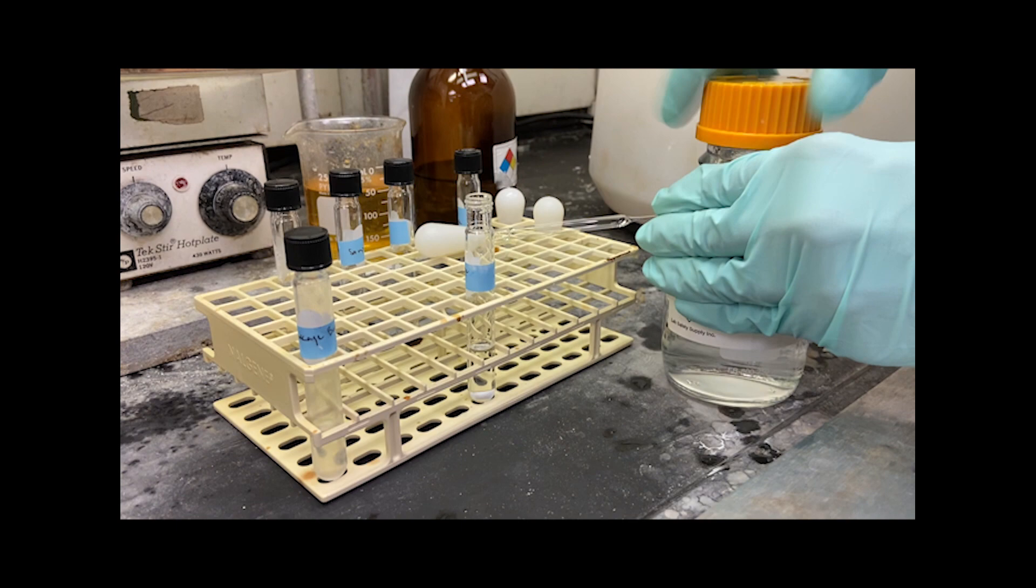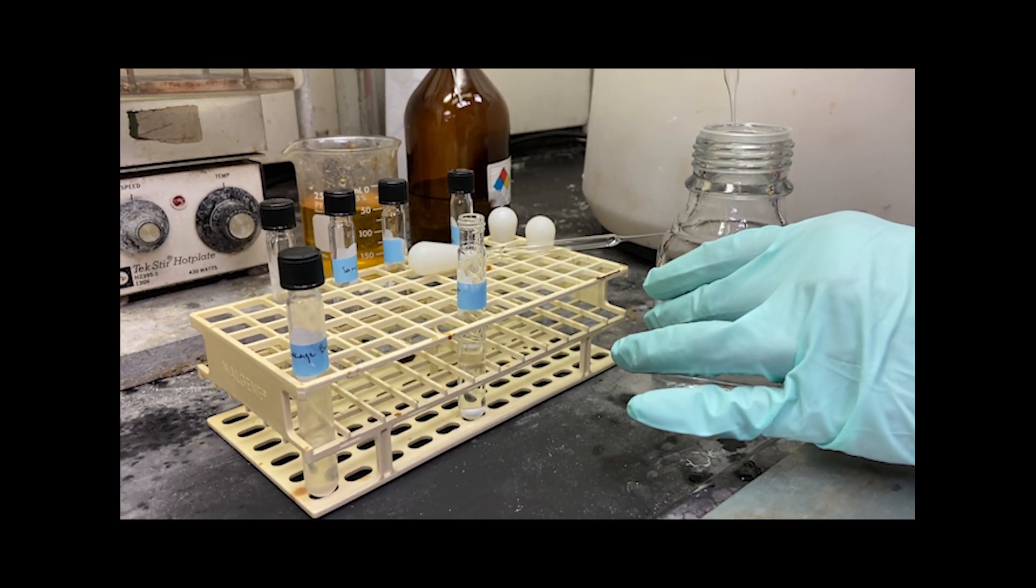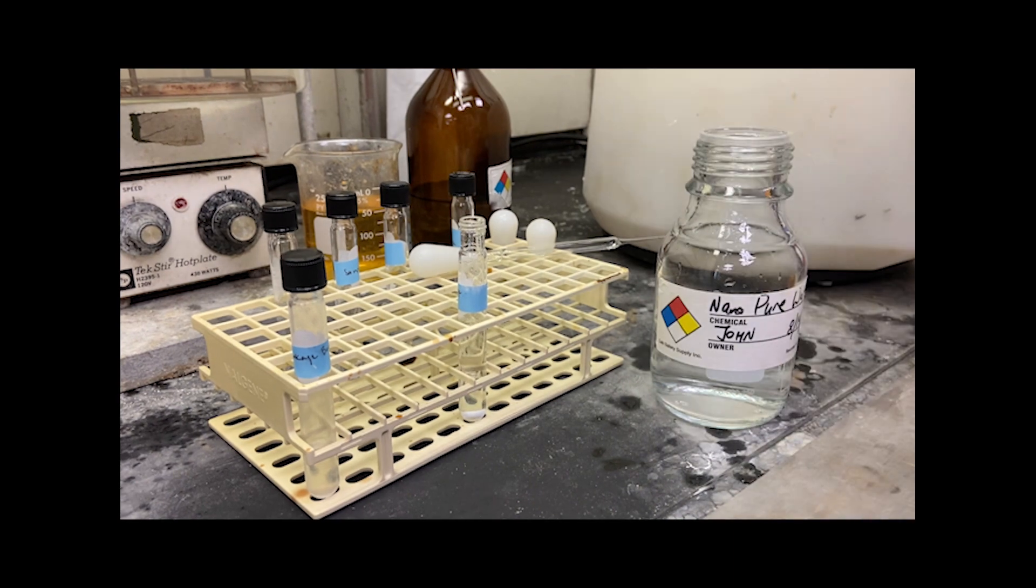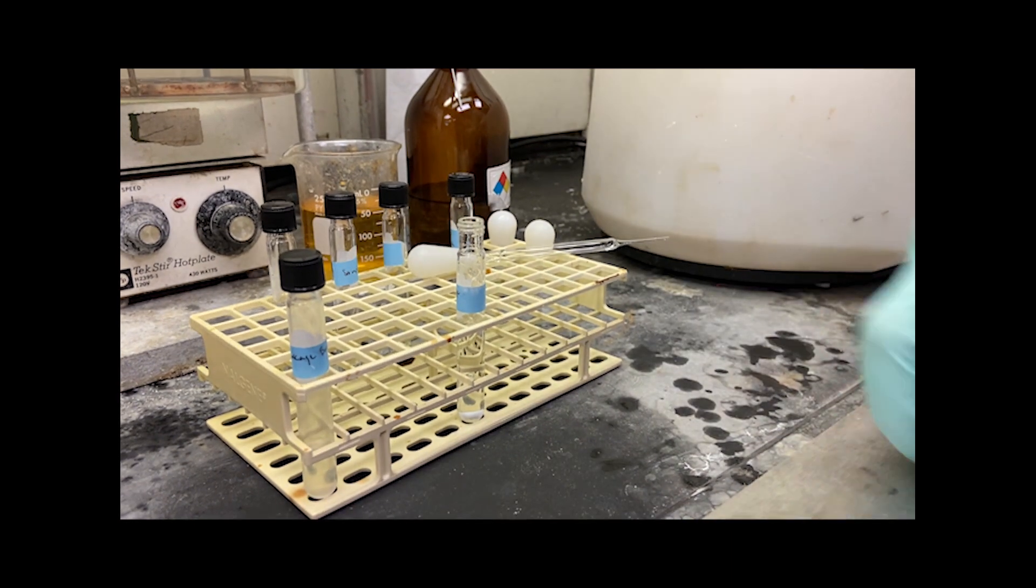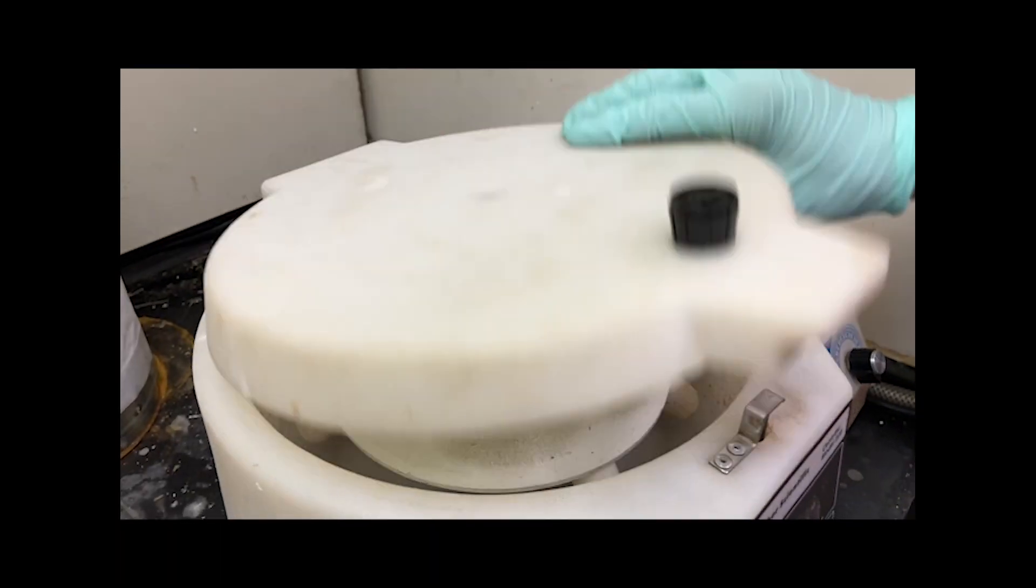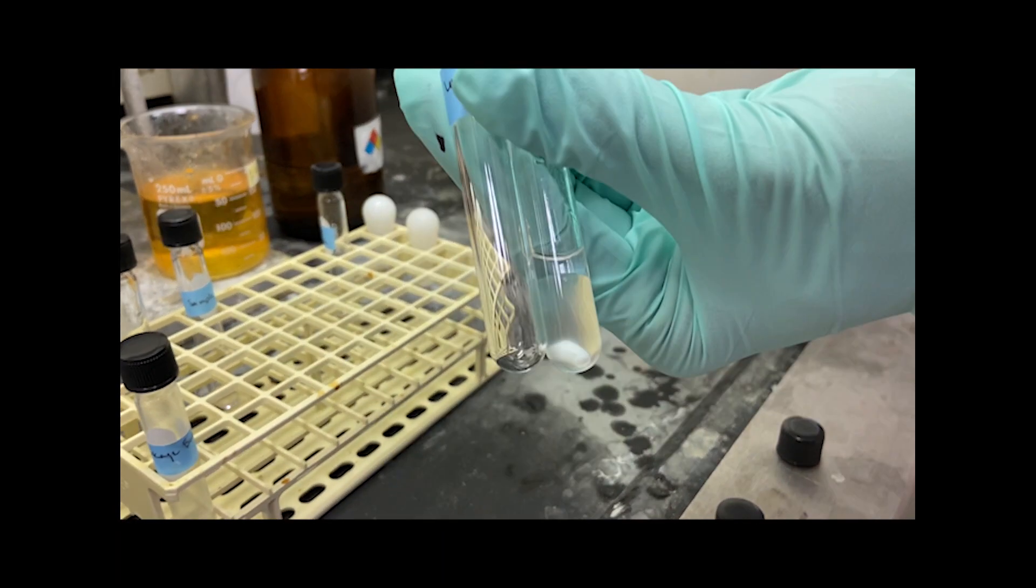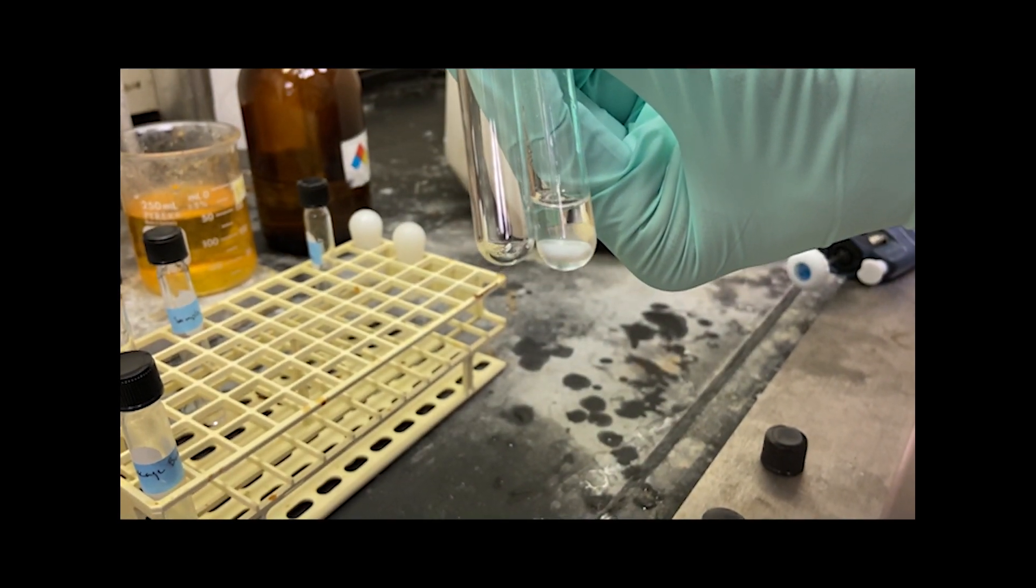This wash is repeated, with 2 more milliliters of water added to the sample, and once again vortexed and centrifuged, removing the water layer. This is in order to remove all the DMSO from the sample. This is repeated a total of 5 times, and finally the DCM layer is transferred to another tube to be dried down under nitrogen stream fully.